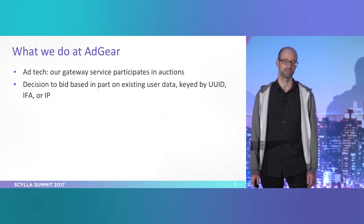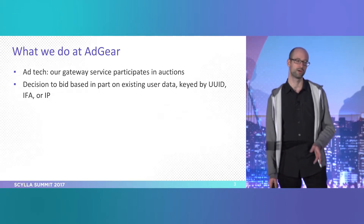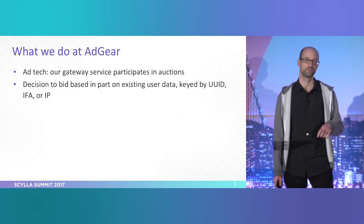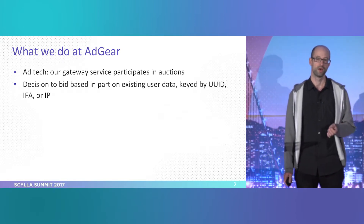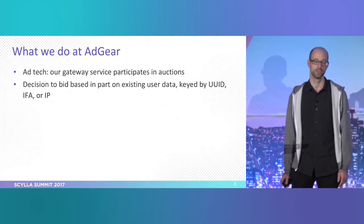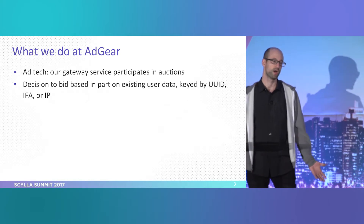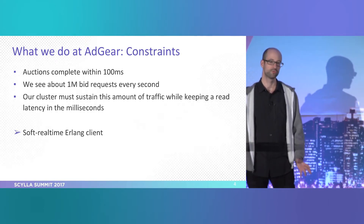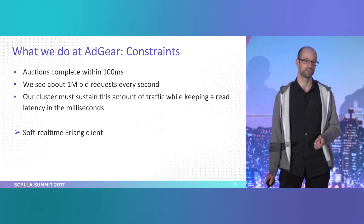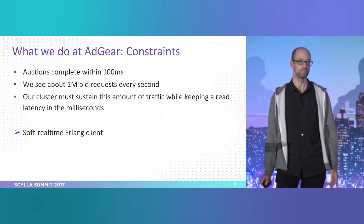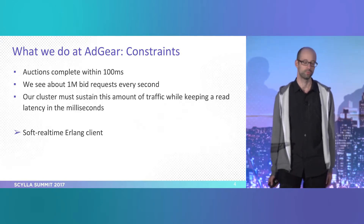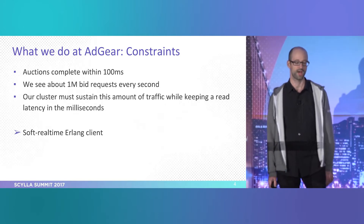The way it works is that when you visit a website and there is an ad on it, the ad that you are going to be shown is not decided until after you visit. It's a real-time auction. Within usually 100 milliseconds, the interested parties have to bid — say how much they're willing to pay for this person. We take all bids together and the highest one wins, but it has to happen fast.